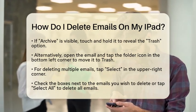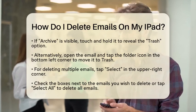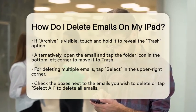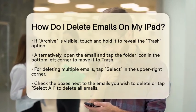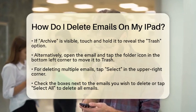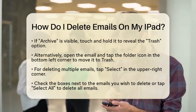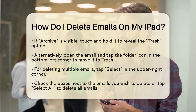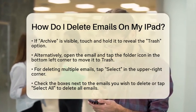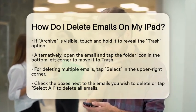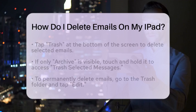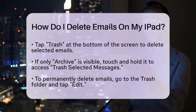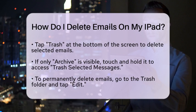If you have multiple emails to delete, there is an easy way to do this too. In the upper right corner of the screen, tap Select. This will allow you to check the boxes next to the emails you want to delete. If you want to delete all emails, you can tap Select All. Once you have made your selections, tap Trash at the bottom of the screen. If you only see Archive, touch and hold it to access the Trash Selected Messages option.